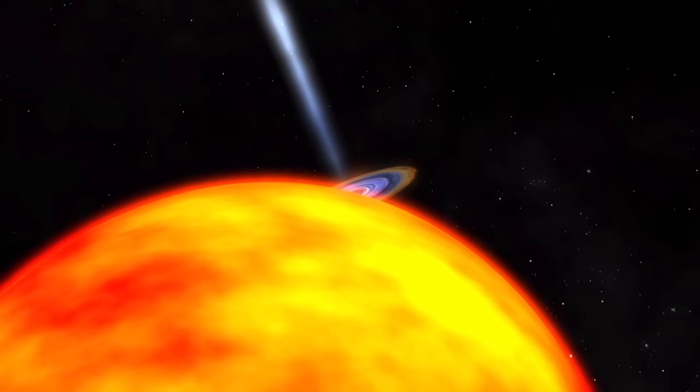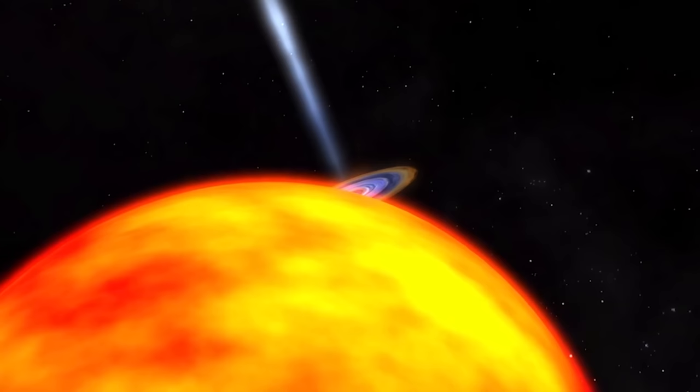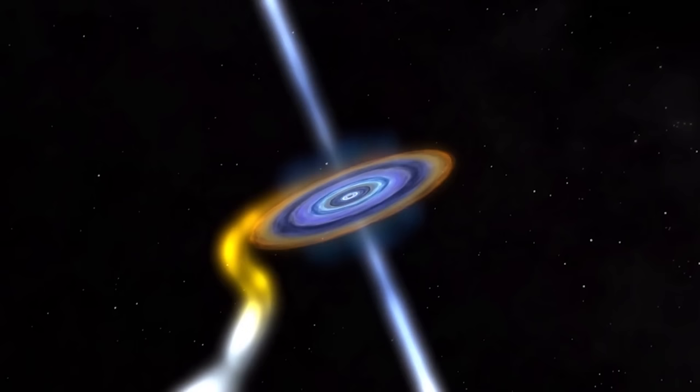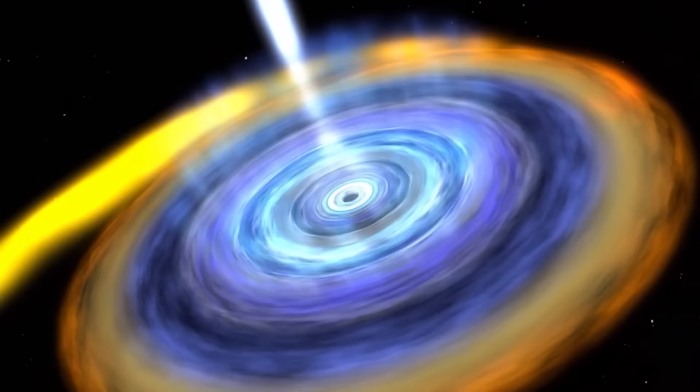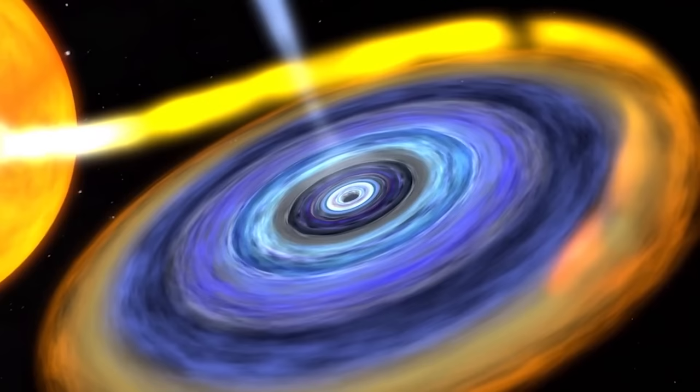As with other black holes, the matter that is not engulfed is expelled into the cosmos in the form of jets. However, when you see it in your line of sight, you immediately notice that it is not like its cousins. This cosmic object is distinguished from other black holes by a misalignment between its axes of rotation.